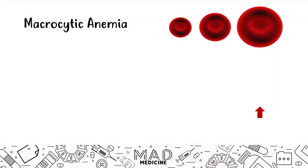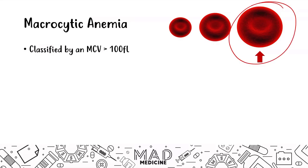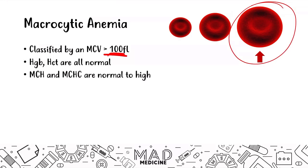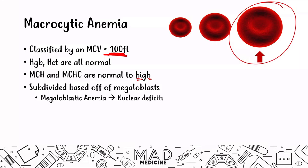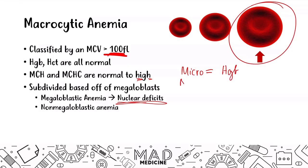The last type is macrocytic anemia, where you can have very large red blood cells. It is classified with an MCV value greater than 100, and usually hemoglobin and hematocrit are normal. MCH and MCHC might be normal or could also be high depending on production. Macrocytic anemias are going to be based off of megaloblasts. A megaloblastic anemia means you have nuclear deficits happening — a problem with DNA replication and DNA function itself. Then you can also have non-megaloblastic anemia. So in macrocytic, you are going to have nuclear issues.